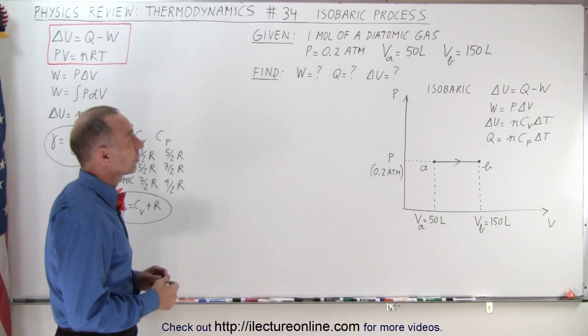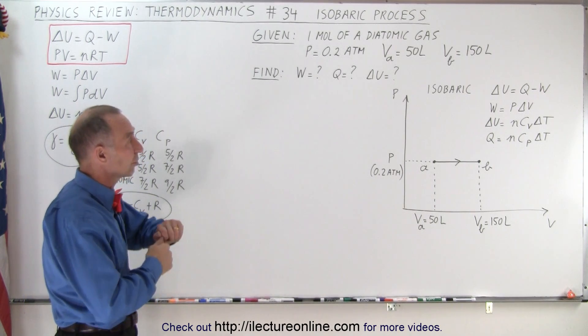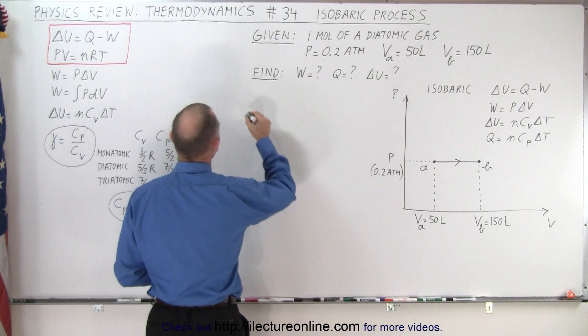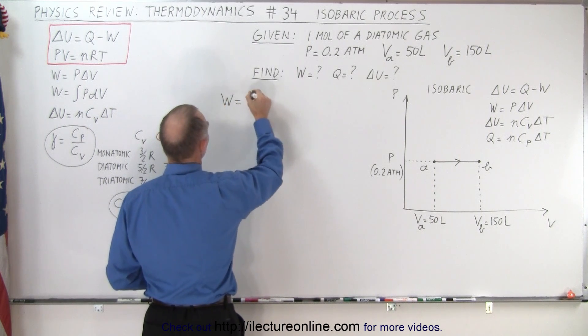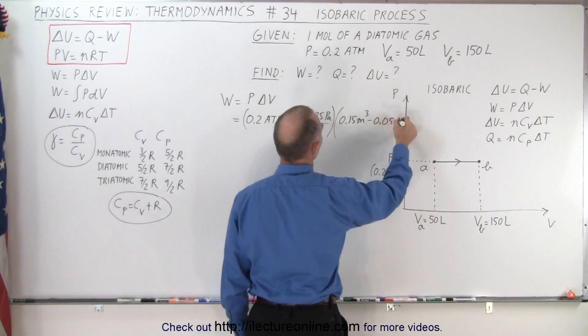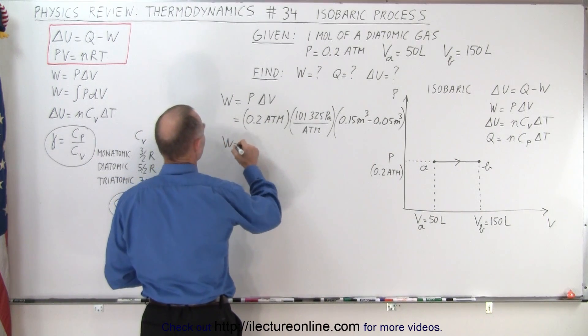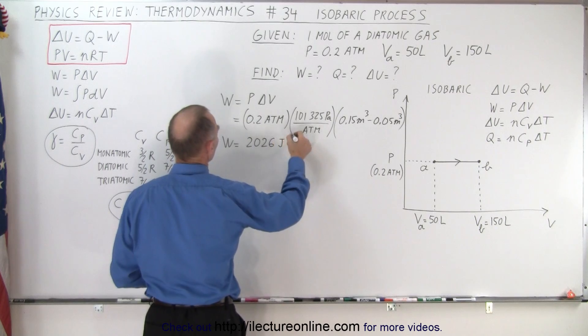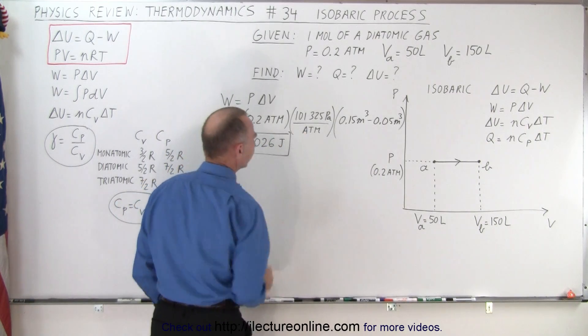We can easily figure out the work done because it's pressure times the change in the volume. So in this case, the work done equals the pressure times the change in the volume. So the work done is equal to 2026 joules. There we go. So that was easy enough.